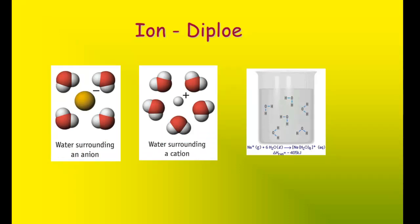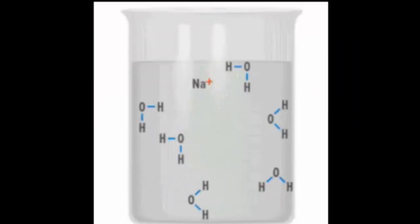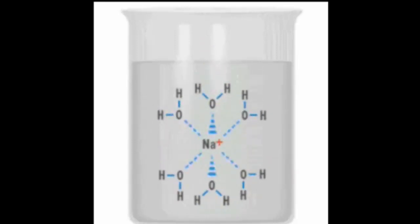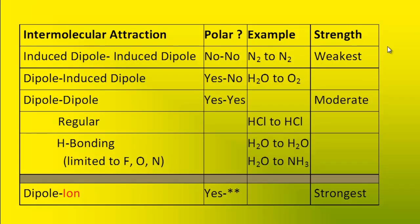The last intermolecular attraction we'll look at is ion–dipole. This occurs between an ion — whether a cation or anion — and a polar molecule. Notice how the anion is attracted to a water molecule, and notice the orientation of the water molecule: the hydrogens are slightly positive and are pointed towards the negative anion. When a cation engages in ion–dipole attractions with a water molecule, the oxygen is pointed towards the cation because the oxygen is slightly negative. This table summarizes all of the intermolecular attractions covered in this video.